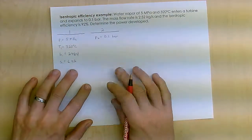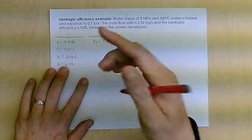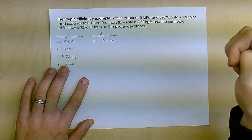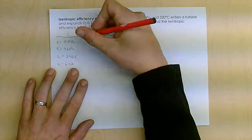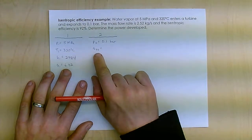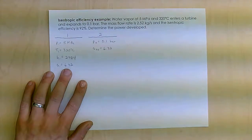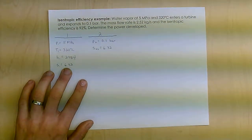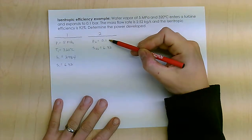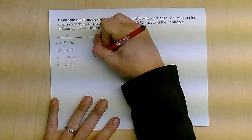Now for an ideal turbine, where my isentropic efficiency would be 100%, the best-case scenario, my S value over here, which I'll call S2S, meaning isentropic or best-case scenario, that would be 6.32. So now for the best-case scenario, I have a pressure and an entropy, and I can go look up H2S.